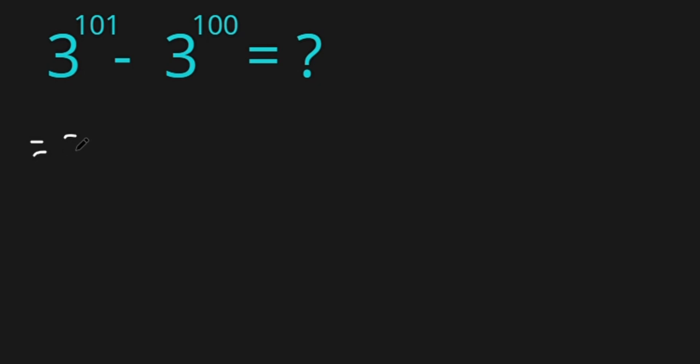So what do we have? 3 to the power of 101 can be written as 3 to the power of 100 plus 1, minus 3 to the power of 100.